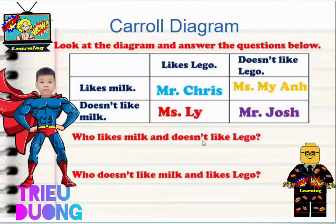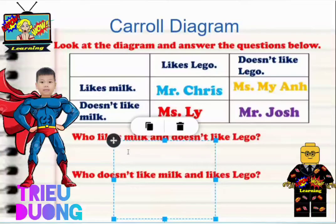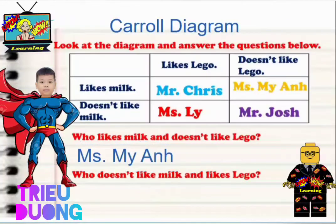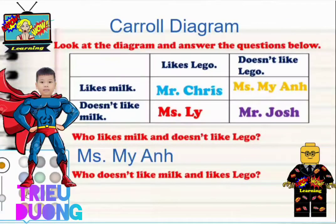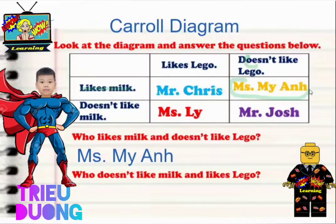So, Chio Zung, it says: who likes milk and doesn't like Lego? It's Miss Me Angry. Right, so let's have a look. Miss Me Angry. Let's highlight this in green. Someone who likes milk but doesn't like Lego — and that person is, we can see here, Miss Me Angry. Excellent. Because if we go all the way across, she likes milk and she doesn't like Lego.